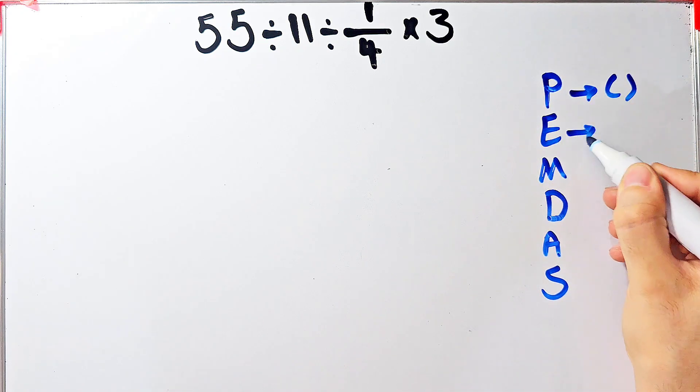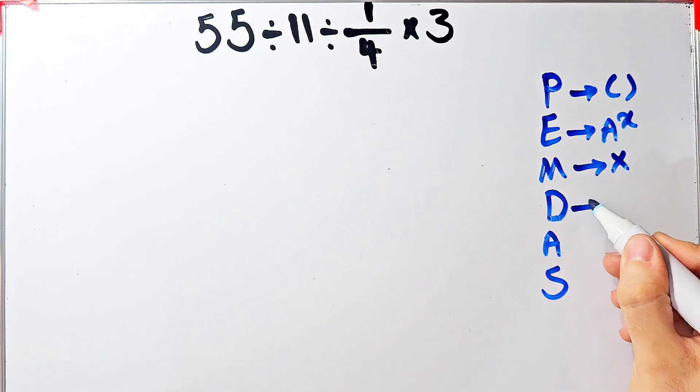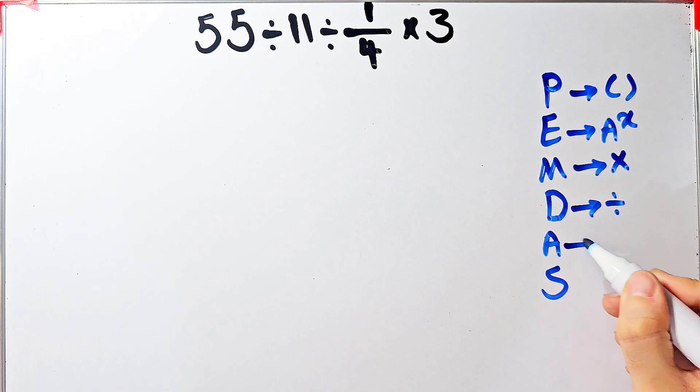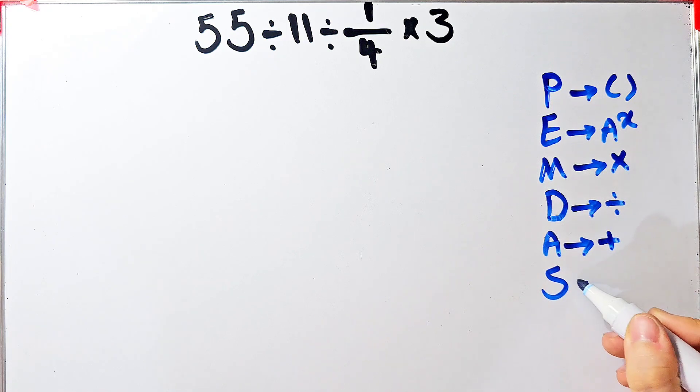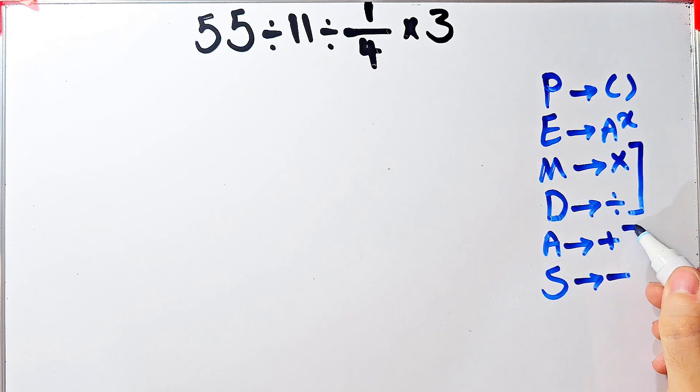M stands for multiplication, D stands for division, A stands for addition, and S stands for subtraction. Multiplication and division have the same level of priority. Also, addition and subtraction have the same level of priority.